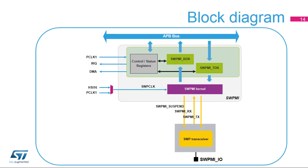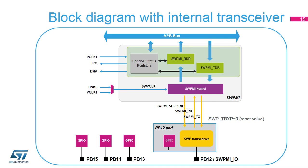Here is the block diagram of the SWPMI peripheral. The kernel part is clocked either by the HSI-16 internal RC oscillator or by PCLK1, which is the APB bus clock. The interface with the APB bus allows access to the SWPMI registers by the CPU. There are also connections to the NVIC and the DMA. The SWP transceiver is embedded in the STM32, which interfaces with the external pin through the SWPMI I/O signal. Here is the default configuration using the internal transceiver. The SWPMI I/O signal is available on the PB12 pin.